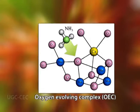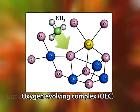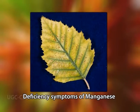Manganese, in the form of the manganoproteins, is part of the oxygen-evolving complex. It appears to be involved in the accumulation of charge during the oxidation of water. The major symptom of manganese deficiency is interveinal chlorosis associated with the development of small necrotic spots.